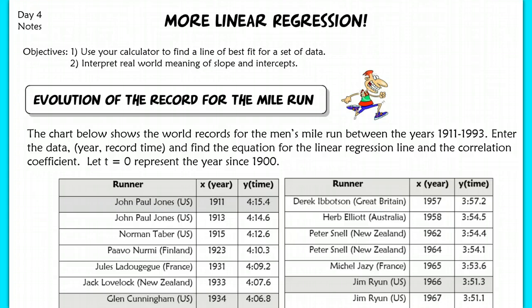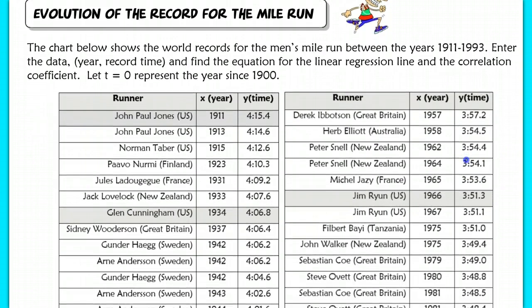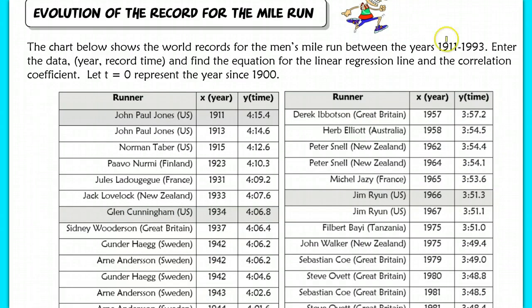I've got the times and the year that the world record was broken between the years of 1911 and 1993. If you're going to enter the data as year and record time, it's pretty straightforward what x and y is, but we want to do this in terms of the year where t equals 0 represents the year 1900.